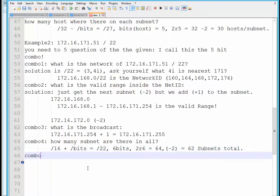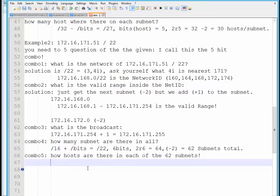And combo number five question is, how many hosts are there in each of the 62 subnets? Well, the answer is, again, easier. From our class, we know that the formula to get the host is 32 minus the bits. And it now becomes slash 22. So how many bits were subtracted from 32 to get 22? Obviously, the answer is 10 bits.